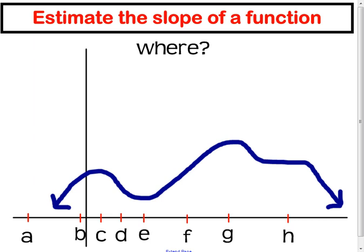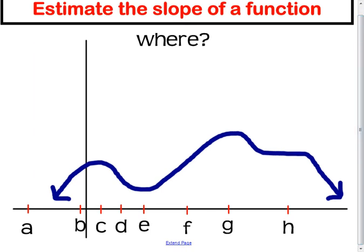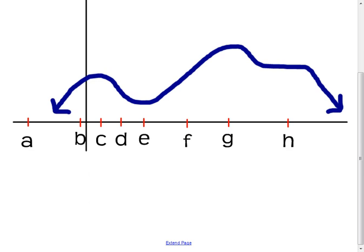Here we're supposed to estimate the slope of the function at all these letters. Starting with E — go to the graph at E and think of where the tangent line would be. The tangent line would probably look something like this. I think the slope of that green line is 0 — it's horizontal. So I'm going to graph at point E a slope of 0, which is my first coordinate of my derivative.